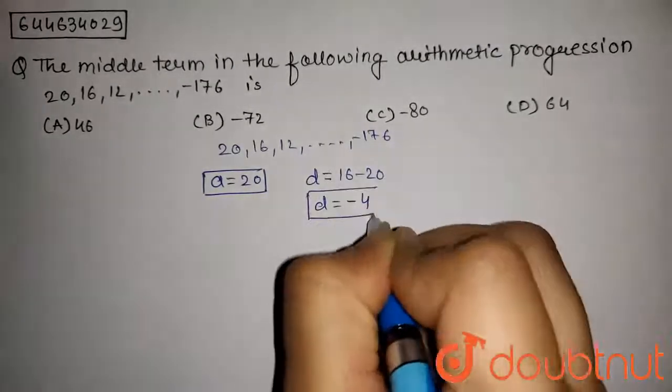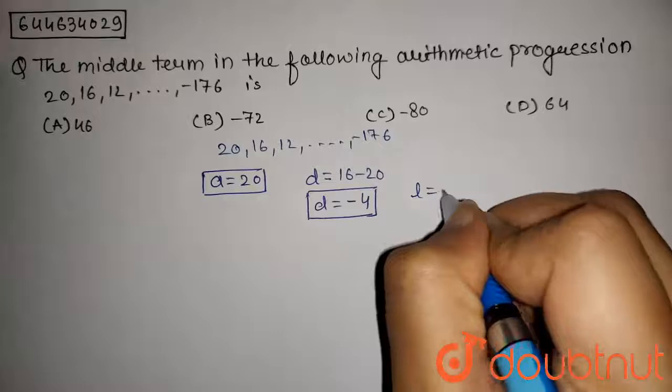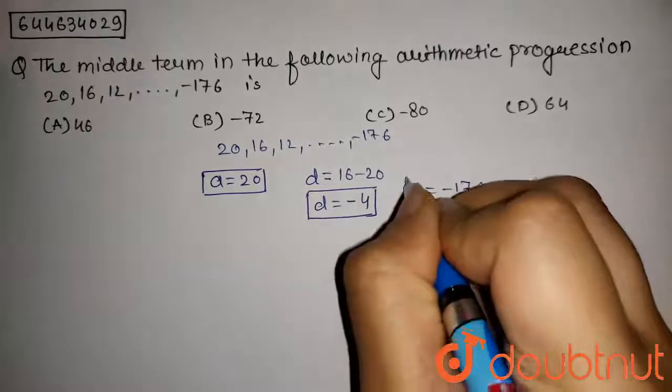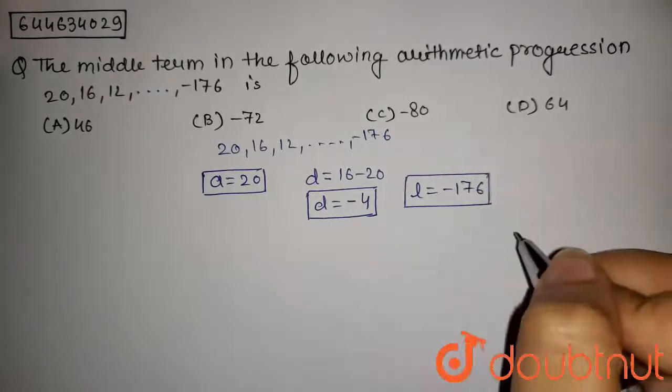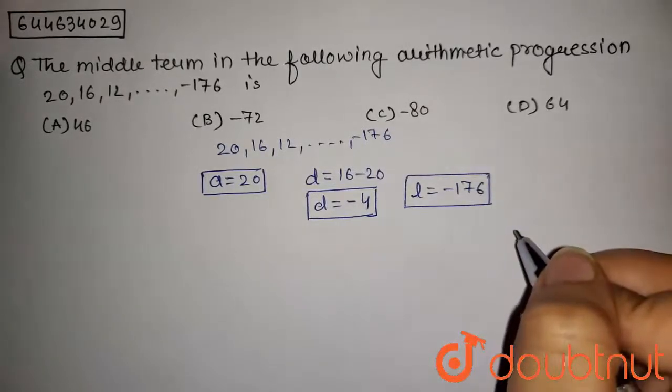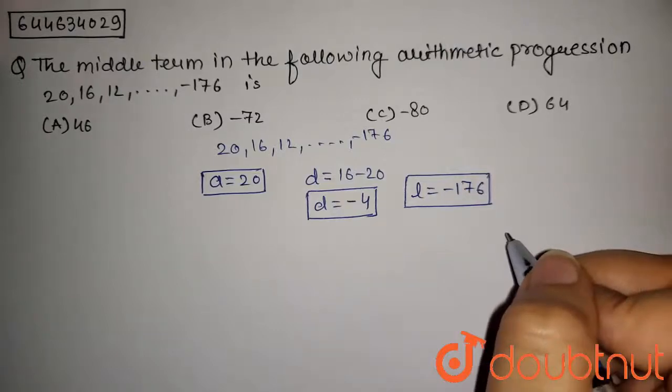And the last term is given as -176. Now to find the middle term of this sequence, first we will find the number of terms in this sequence.